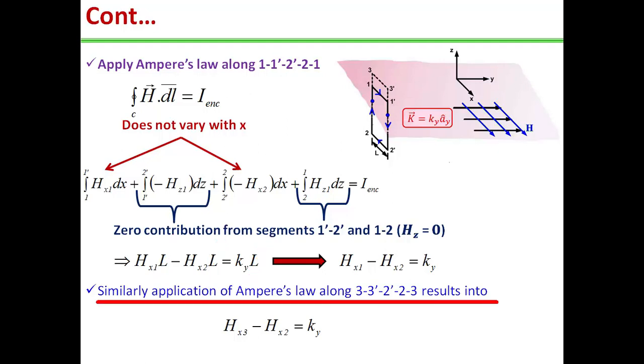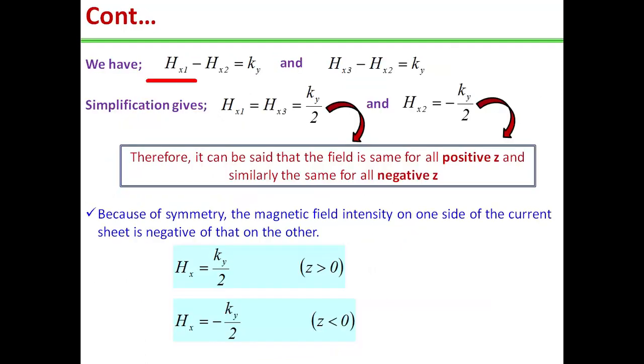So L is basically the length of the element 1-1' and 2'-2, and K_y L is the current over the infinite sheet. So we can write H_x1 minus H_x2 is equal to K_y. Now we make new Amperian path 3-3'-2'-2-3. On application of Ampere's law along this path, results into H_x3 minus H_x2 is equal to K_y. On solving these two equations, we will get H_x1 is equal to H_x3 is equal to K_y by 2, and H_x2 will be equal to minus K_y by 2.